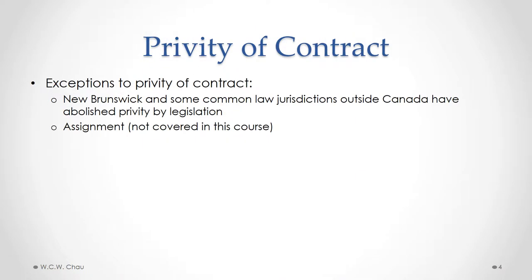There are some exceptions to the rule of privity of contract. In some jurisdictions, including New Brunswick and other jurisdictions outside of Canada, they've decided that this doctrine of privity of contract doesn't make sense, it's unfair, and they've abolished privity by way of legislation. Another way of getting around the rule of privity of contract is by way of assignment.